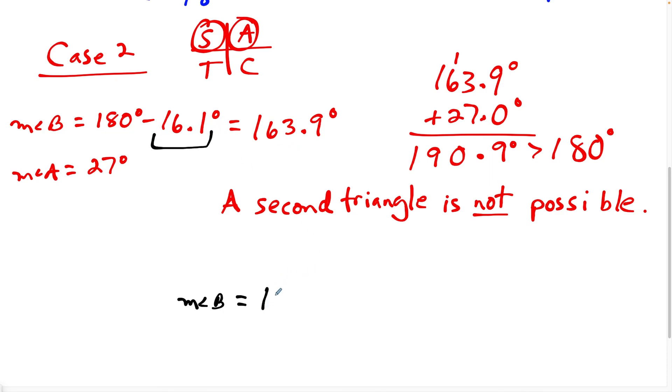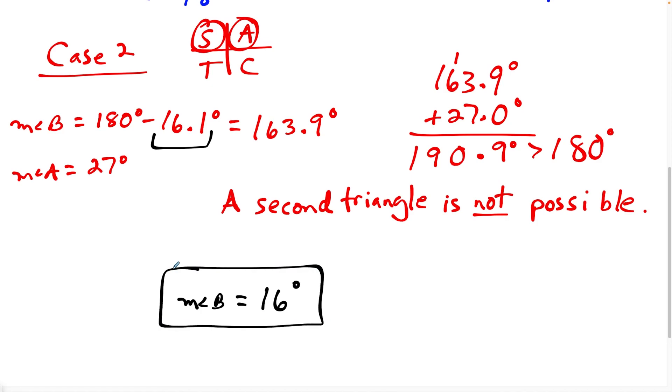So writing our answer formally — the question asked to round to the nearest degree — the measure of angle B is 16 degrees. Only one triangle is possible in this case.